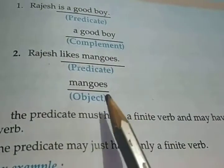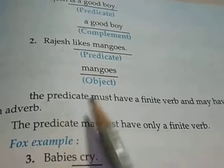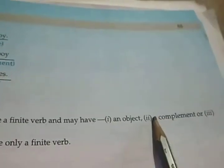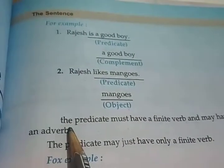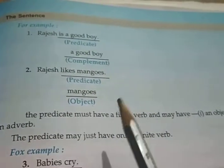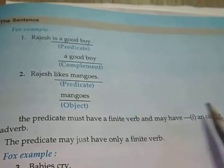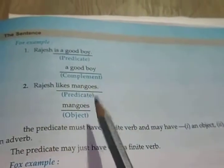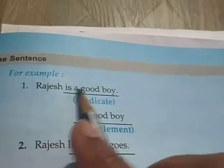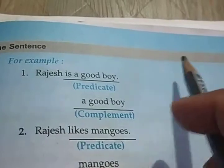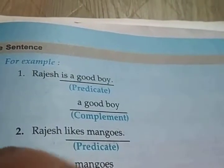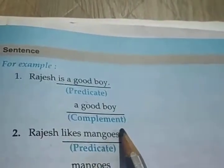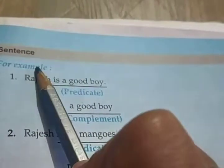The predicate must have a finite verb and may also have an object, a complement, or an adverb. For example, 'Rajesh is a good boy' — Rajesh is the subject, 'is a good boy' is the predicate, and here 'a good boy' is a complement. We are giving a complement to whom? We are giving a complement to the subject.